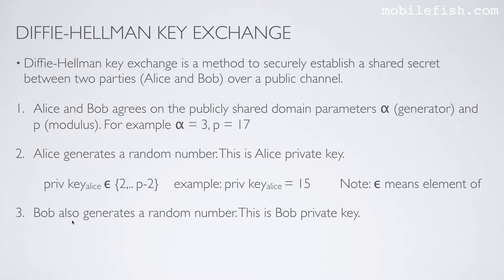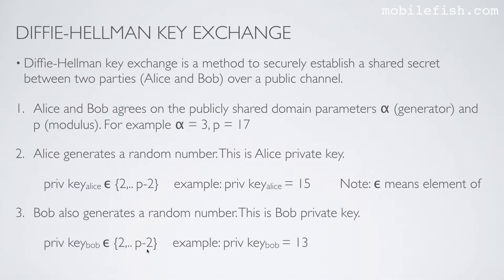Step 3. Bob also generates a random number — this is Bob's private key. Bob's private key must also be a value between 2 and p-2, for example 13.